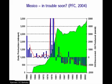It is also important to look at the production curves of other countries. For instance, Mexico, who is an exporter to the United States, is not going to be able to export for much longer, because we can see that they're producing more oil than they're discovering.